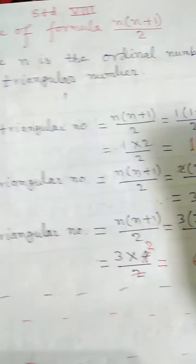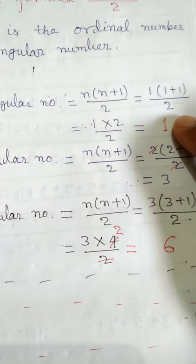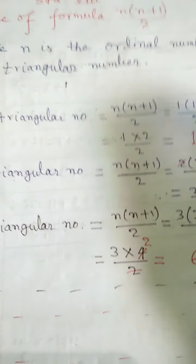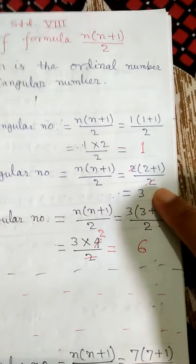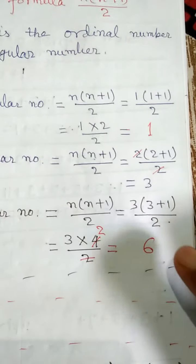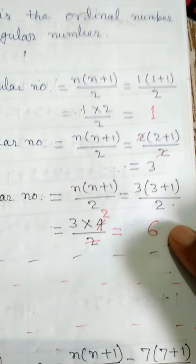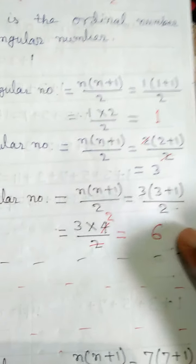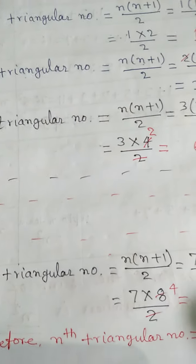The first triangular number is 1. The second triangular number is 3. The third triangular number is 6. The fourth triangular number is 10. And the seventh triangular number is 28.